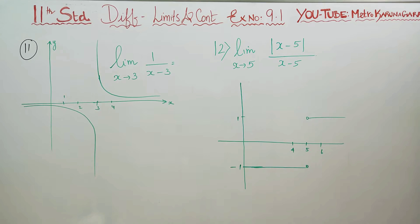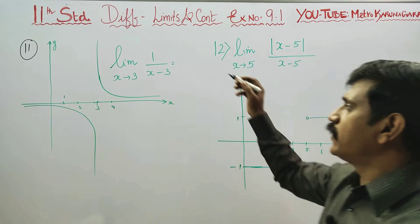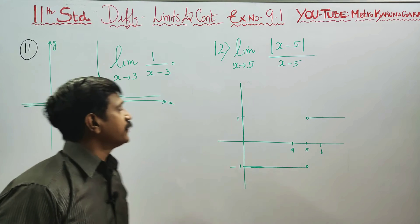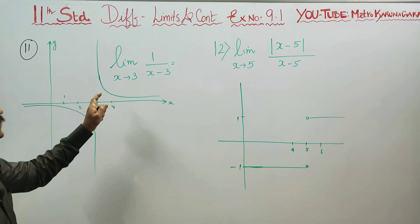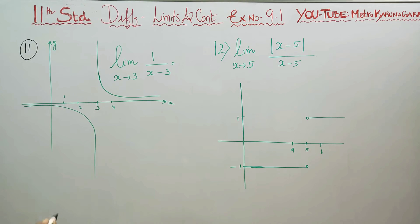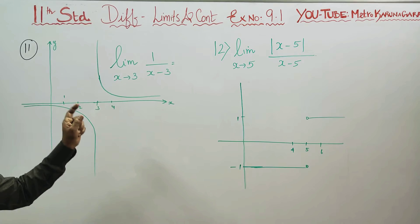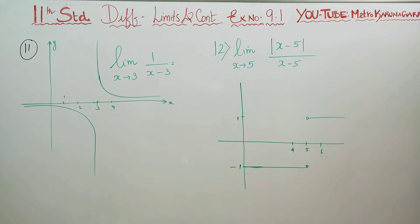Dear students, in exercise 9.1, sum number 11, using the graph you have to find the limit of 1 by (x minus 3) when x turns to 3, or you have to give the reason if the limit does not exist using this graph.